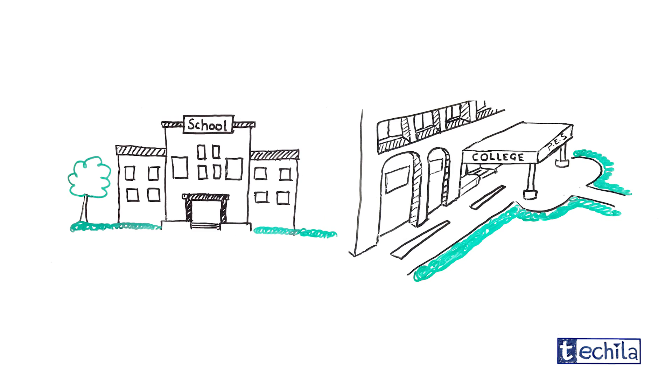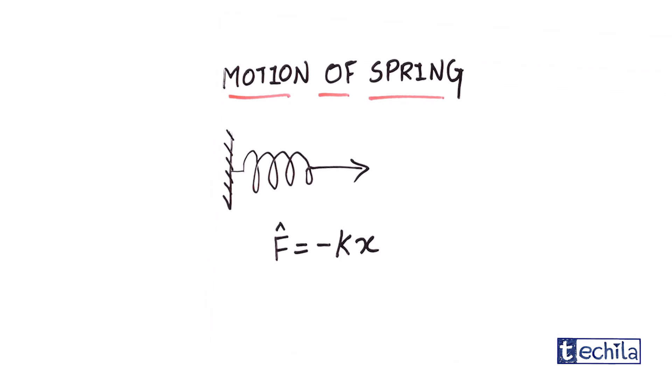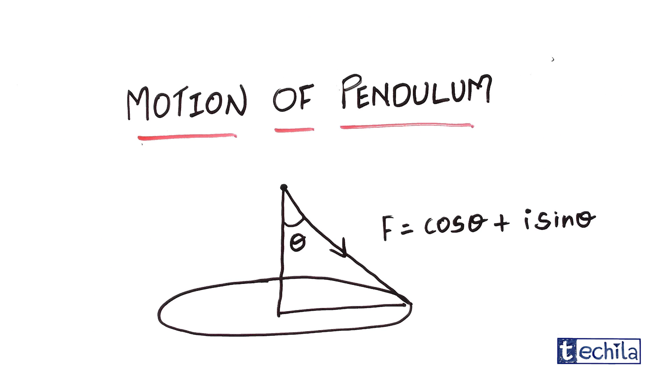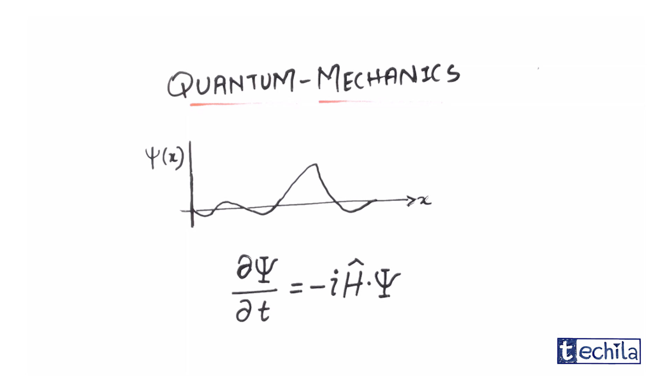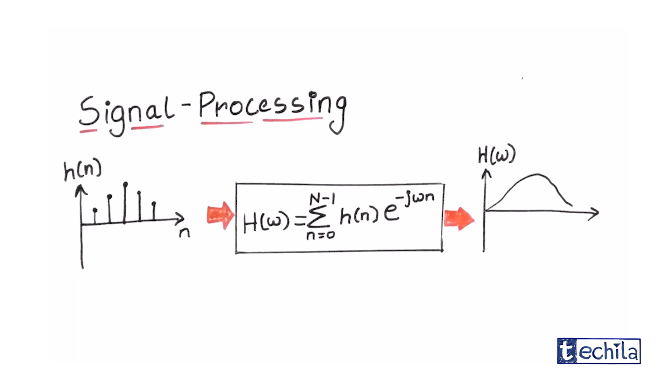We come across complex numbers while studying various concepts in high school and college. Complex numbers are used while describing the motion of the spring, pendulum in classical physics, while studying the wave equation of quantum mechanics, and engineering fields like signal processing.